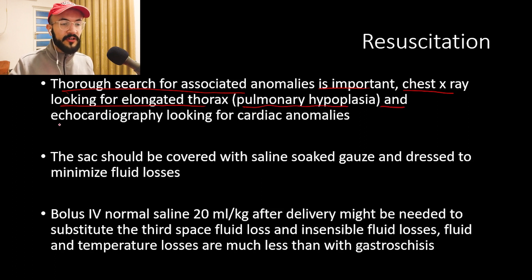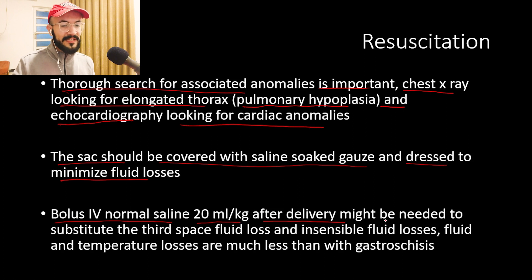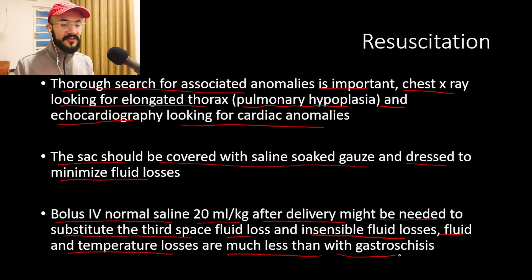The infant is sent for a chest X-ray looking for an elongated thorax indicating pulmonary hypoplasia, and for echocardiography to look for cardiac anomalies. The omphalocele sac should be covered with saline-soaked gauze to minimize fluid losses. A bolus of intravenous normal saline 20 mL/kg after delivery might be needed to substitute the third-space fluid loss from displaced abdominal organs and insensible fluid losses.